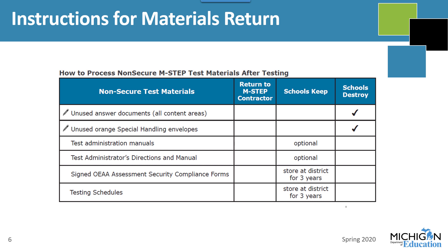Here's the table for non-secure test materials, also on page 63 of the TAM. Make sure you're reviewing the TAM as you get your materials ready so that you don't miss anything. The Return to M-STEP Contractor column is empty because non-secure materials don't need to be returned. Schools can keep test administration manuals, the test administrator's directions and manuals, the OEAA security compliance forms and testing schedules. The security compliance forms and testing schedules have to be stored at the district for three years. Materials to destroy include any unused answer documents and unused special handling envelopes.